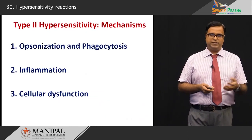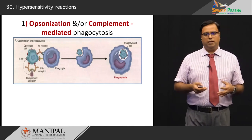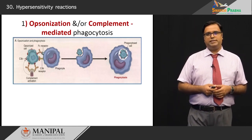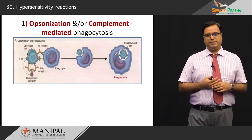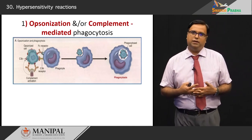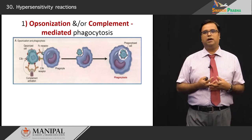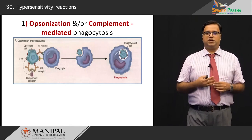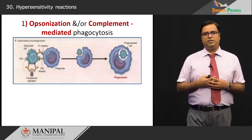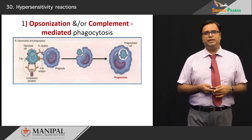The first mechanism is opsonization and phagocytosis. A cell containing antigens mounts an antibody response, with immunoglobulin molecules on the surface. The complement cascade is activated — importantly C3b, which is an opsonin — making the cell a target for phagocytes to devour. The phagocytes recognize the Fc receptor and internalize the cell, which is then broken down by hydrolytic and lysosomal enzymes. Clinical examples include mismatched transfusion reactions, hemolytic disease of the newborn, autoimmune hemolytic anemia, ITP, and drug reactions where the drug acts as a hapten.